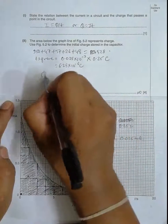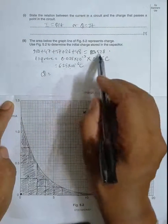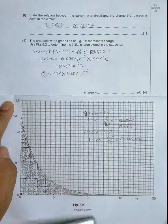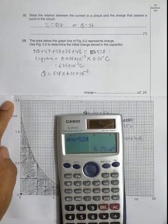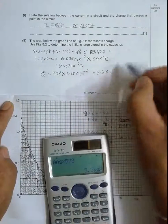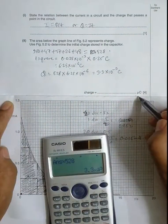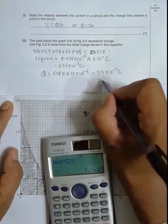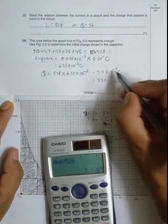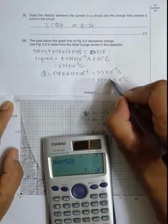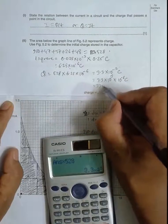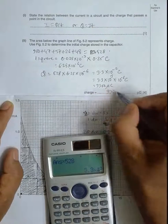The total charge Q equals 528 squares multiplied by 6.25 × 10⁻⁶ coulombs per square, which equals 3.3 × 10⁻³ coulombs. Converting to microcoulombs: multiply by 10³, giving 3300 microcoulombs. So the answer is 3300 microcoulombs.